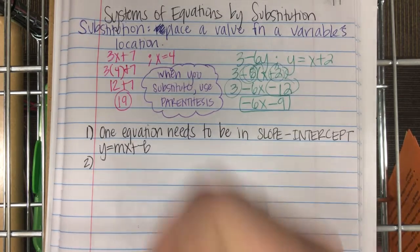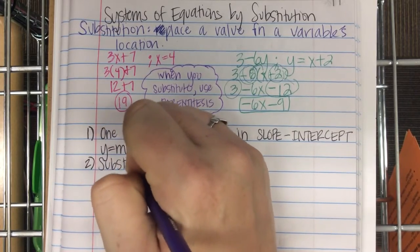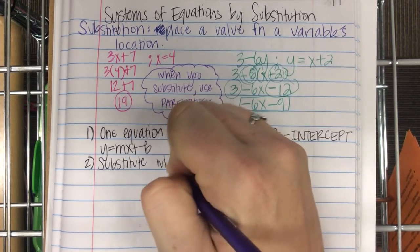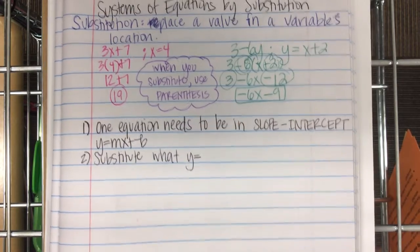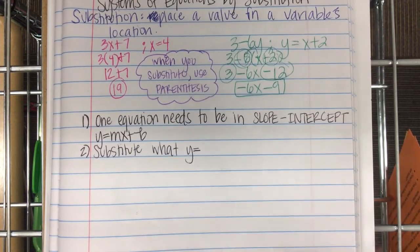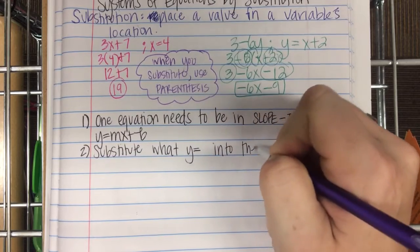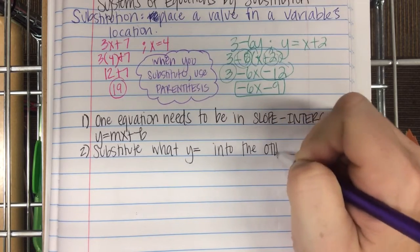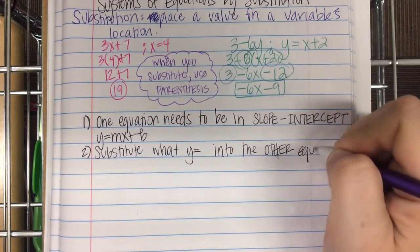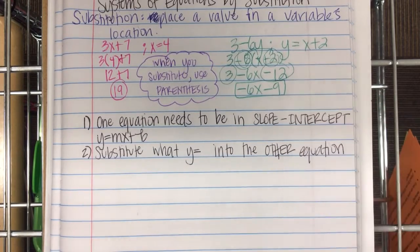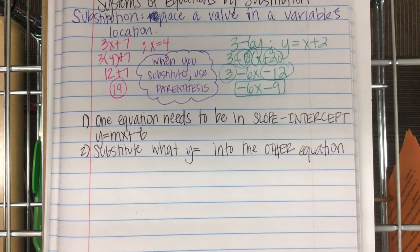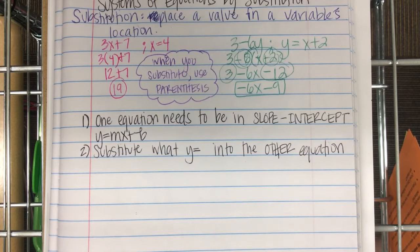Step two. Substitute what y equals into the other equation. So if y equals one-half x plus three, whatever y equals goes into the other equation.